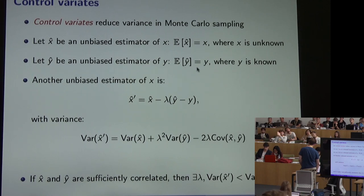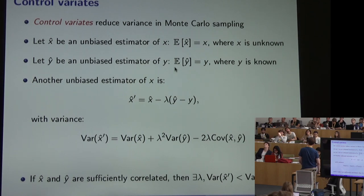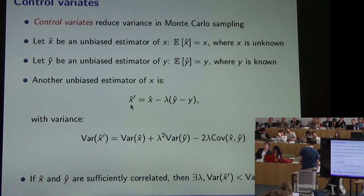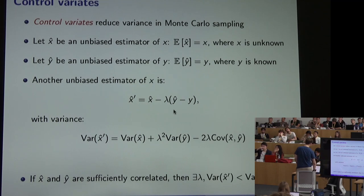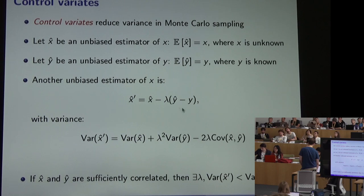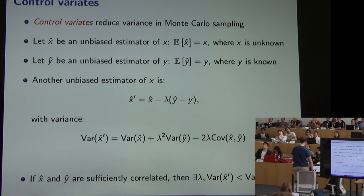Using y we can construct another unbiased estimator x-hat-prime, which is our original estimator minus the term y-hat minus its expected value. Since the expected value of that subtracted term is zero, x-hat-prime remains unbiased. The point is that if x and y are sufficiently correlated, there will be some value of hyperparameter lambda such that the variance of the new estimator is lower than the variance of the old one.